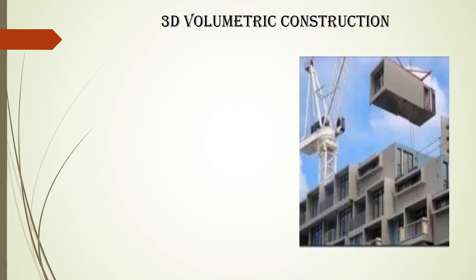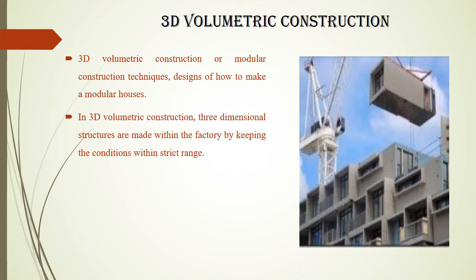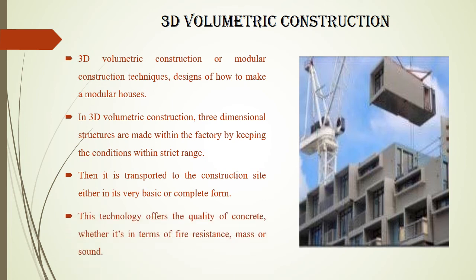The next method is 3D volumetric construction, also called modular construction. In 3D volumetric construction, structures are made within the factory by keeping conditions within a strict range, then transported to the construction site either in basic or complete form. This technology offers quality in terms of fire resistance, mass and sound, making it one of the most important methods of modern construction.